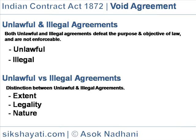Nature: an illegal act involves crime of moral turpitude or is contrary to public policy — for example, an agreement to illicit cohabitation, an agreement to defraud the revenue, to commit a crime, or an agreement which tends to endanger public safety. Unlawful acts, on the other hand, involve a non-criminal breach of law. These are normally disapproved by law on some ground of public policy, like agreements in restraint of trade, marriage, legal proceedings, etc.